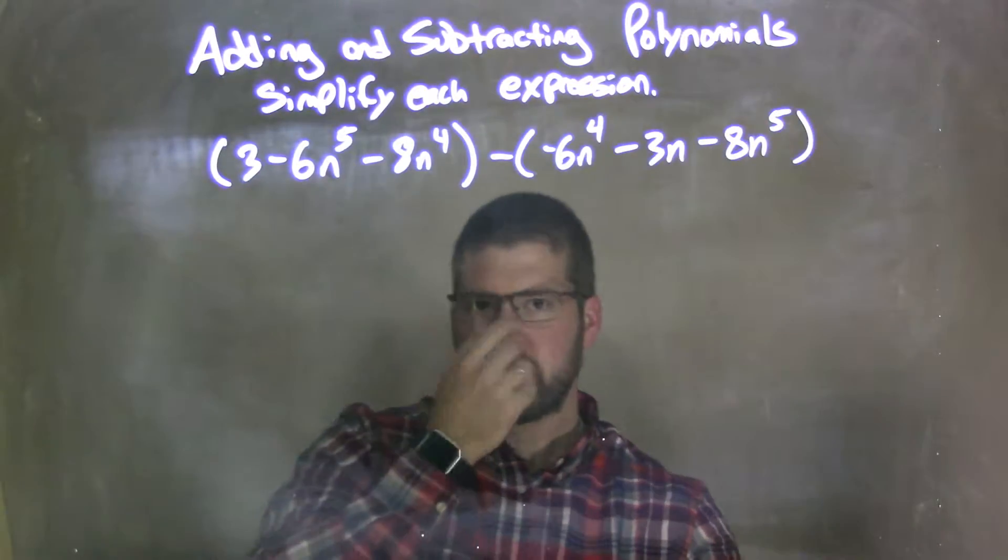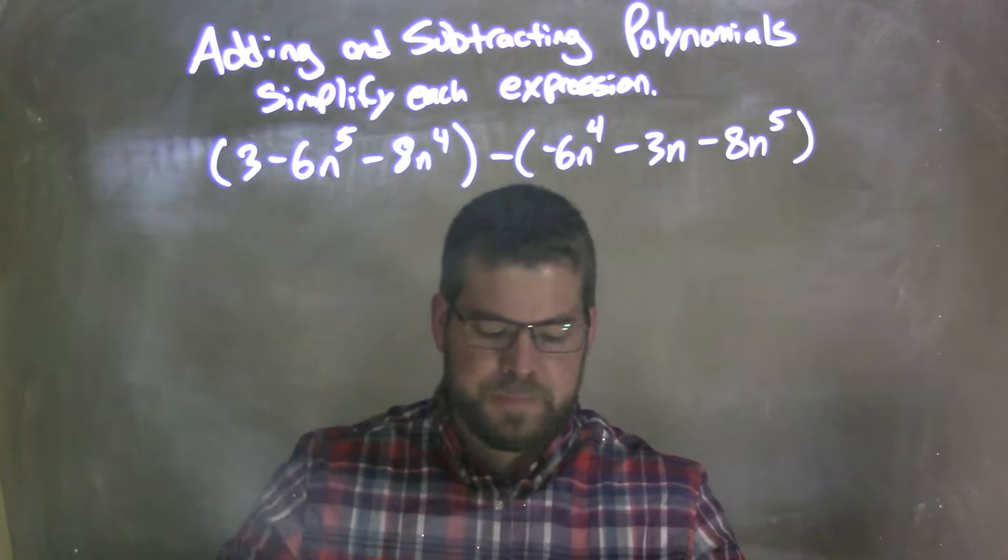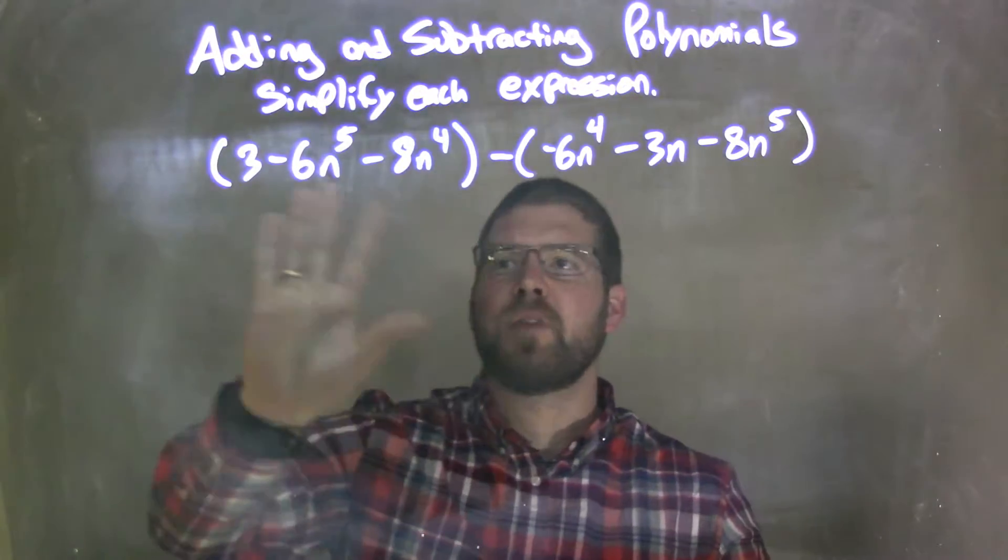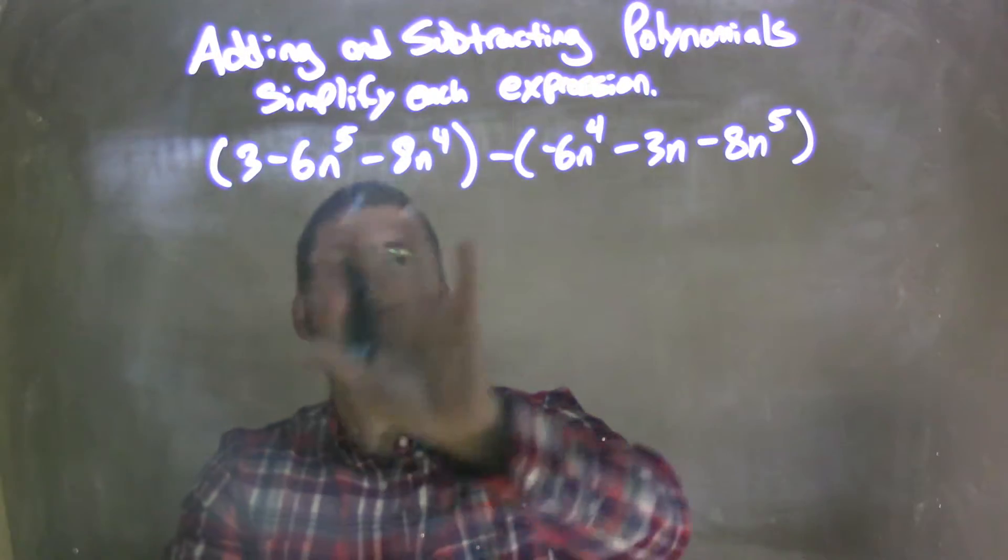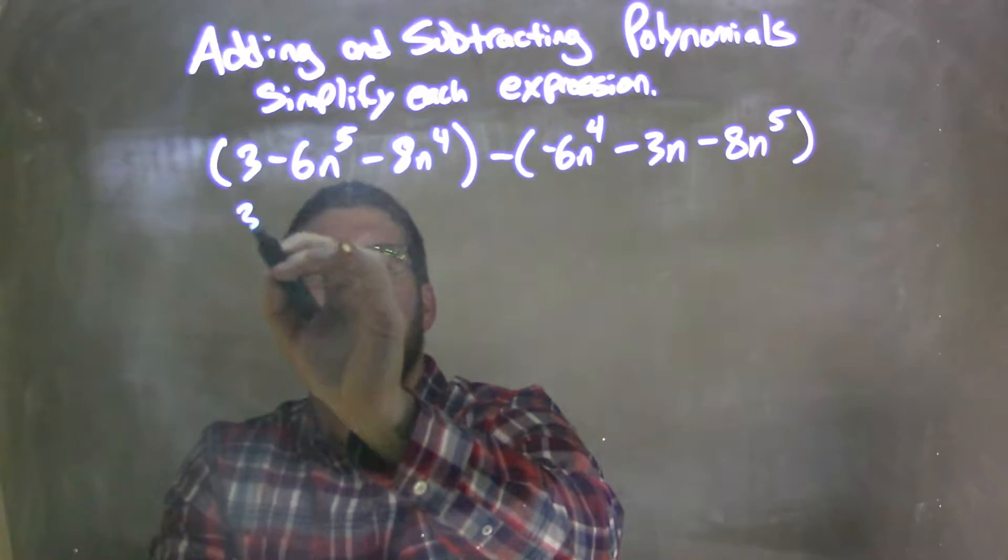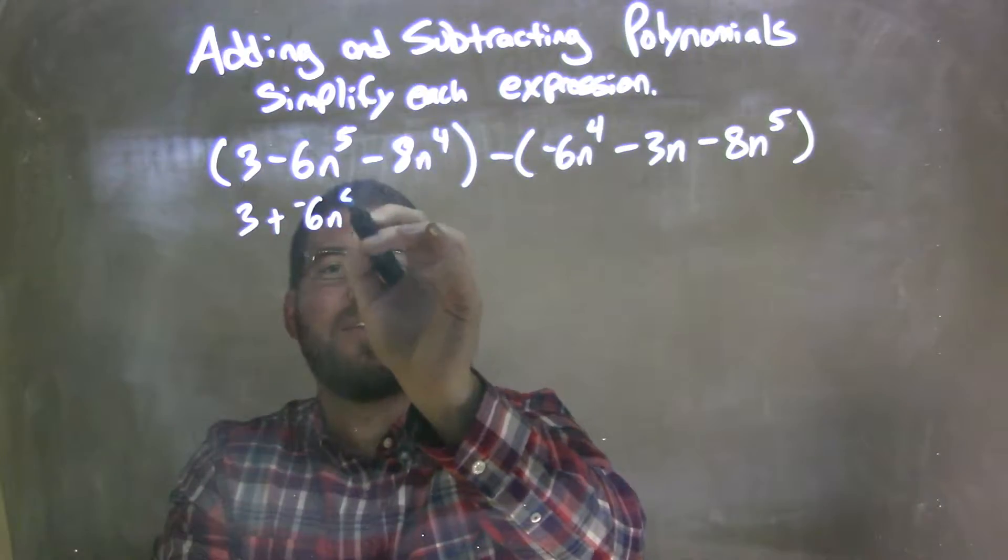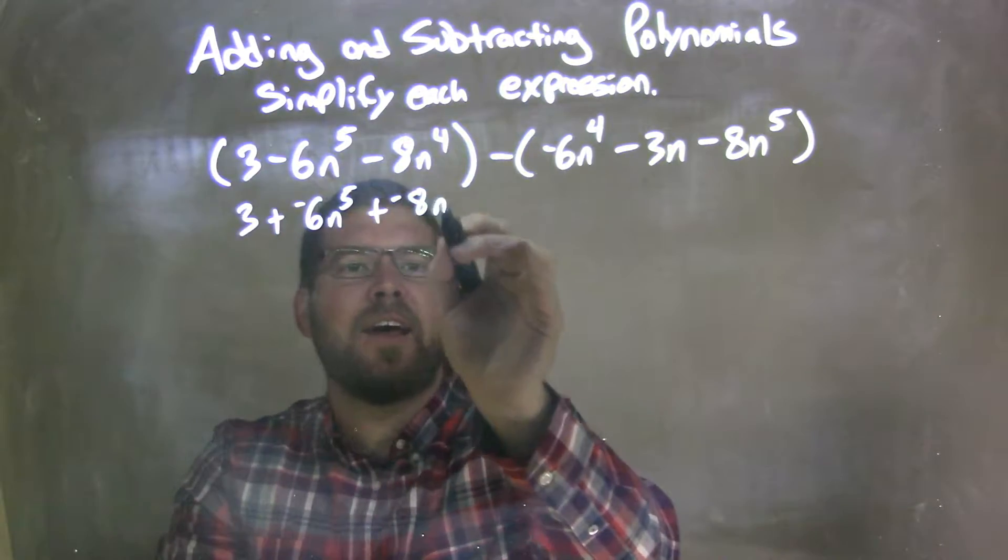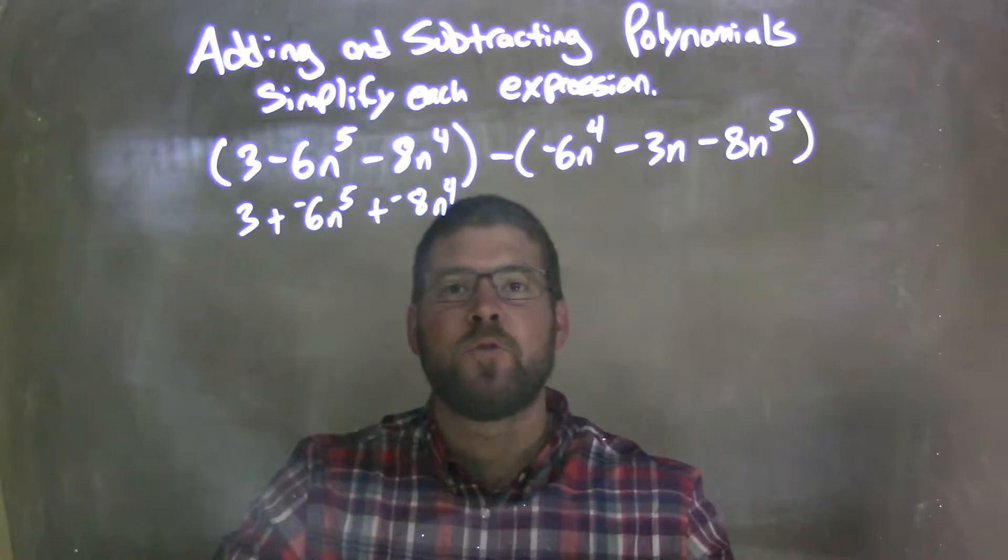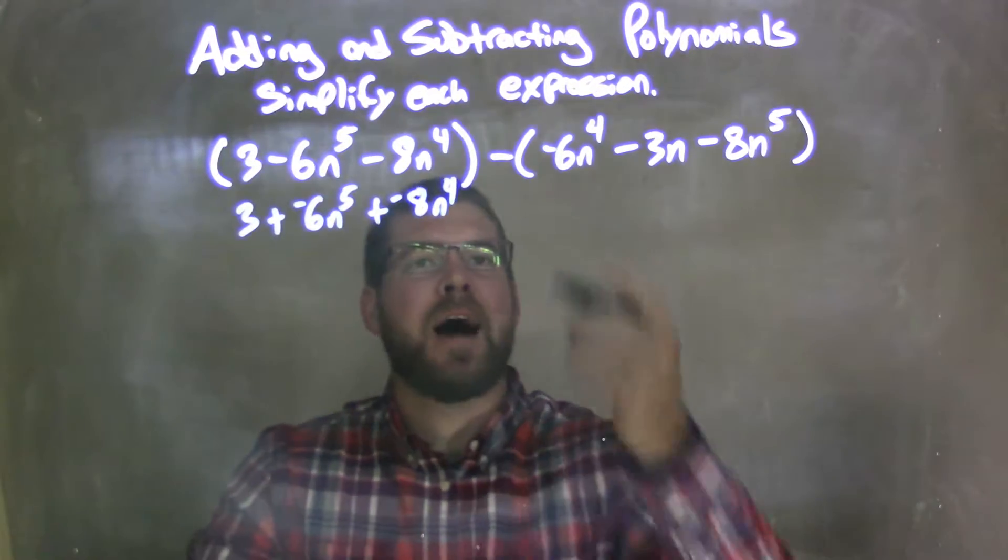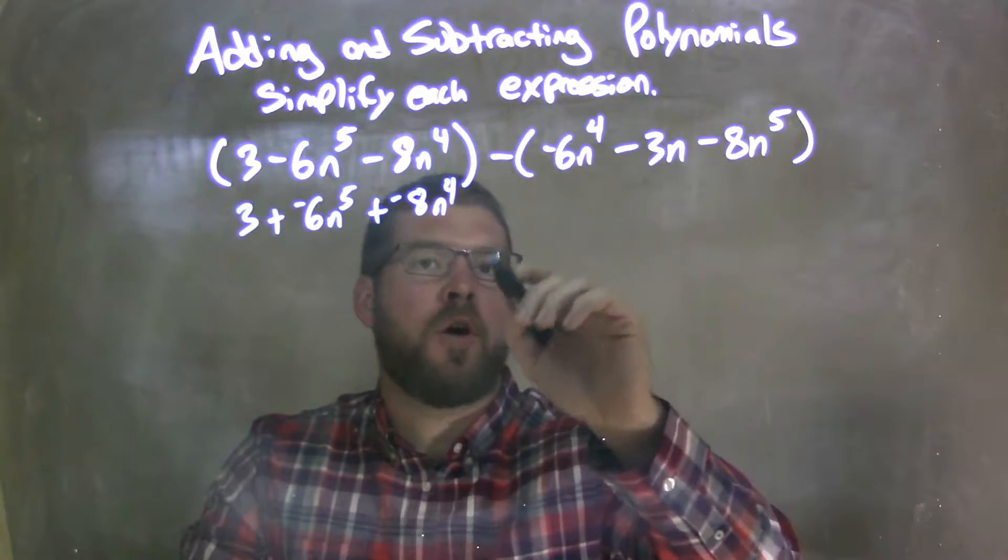From here, I'm going to simplify this. And again, I like to have everything adding a negative. So I'm going to take everything in this parentheses and make that 3 plus a negative 6n to the 5th plus a negative 8n to the 4th. Your teachers might not like that technique. I find it easier for myself. It keeps everything in line.